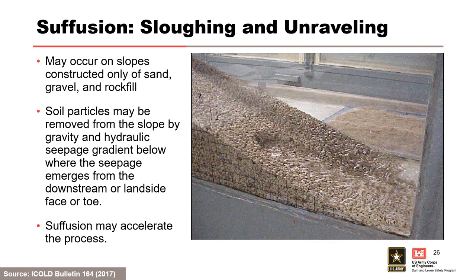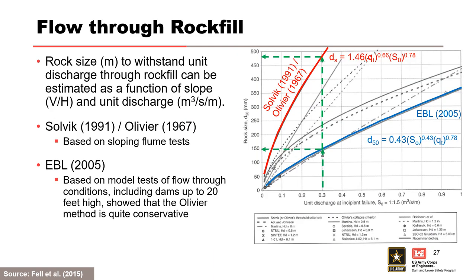Suffusion of the finer fraction of internally unstable downstream shells can increase permeability, which can lead to sloughing and unraveling of the downstream or land side face. The likelihood of breach due to unraveling can be informed by assessing the rock size to withstand a unit discharge through the rock fill as a function of slope and unit discharge using the methods of Slovik 1991 and Olivier 1967, and the revised method of EBL 2005. It is suggested to use the EBL 2005 method because the Slovik and Olivier method is too conservative. For a given discharge of 0.3 cubic meters per second per meter, the mean rock size for stability is about three times as much using the Slovik-Olivier method compared to EBL 2005.